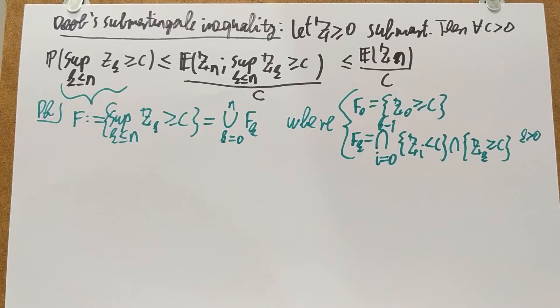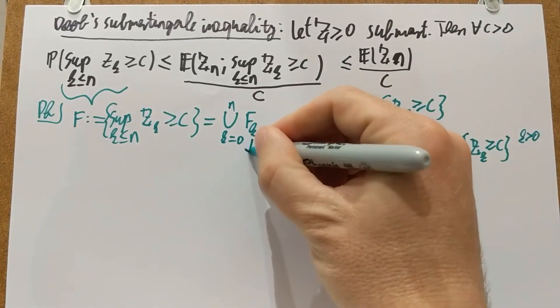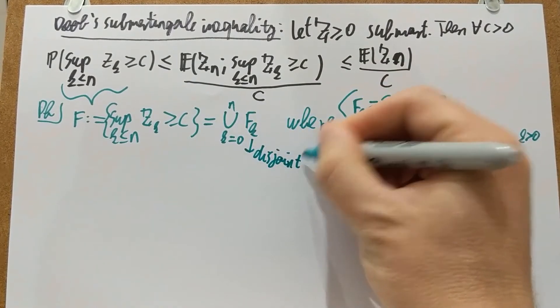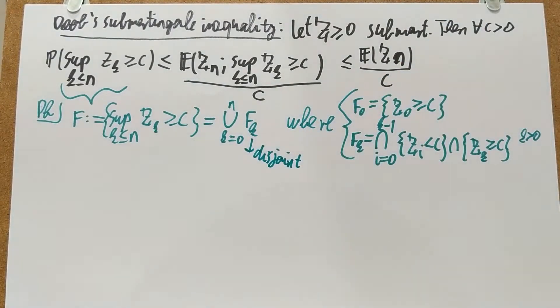And that makes maybe it's even easier to understand that this is just the union of finitely many things. Now, moreover, this union is a disjoint union. So these guys here are disjoint because there can only be one instance when you first reach level C.